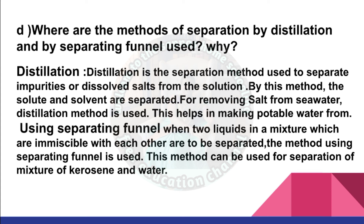Where are the methods of separation by distillation and by separating funnel used? Distillation is used to separate impurities or dissolved salts from a solution, separating solutes from the solvent. For removing salt from seawater, distillation is used, which helps in making potable water. When two immiscible liquids in a mixture are to be separated, the method using a separating funnel is used — for example, for the separation of a mixture of kerosene and water.